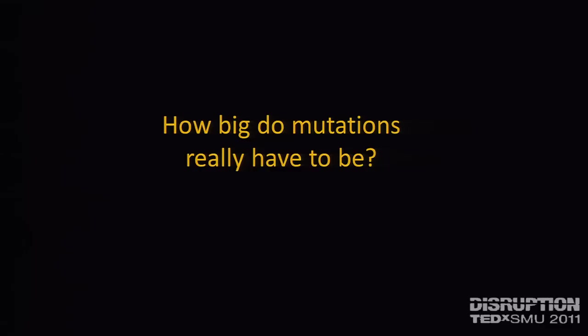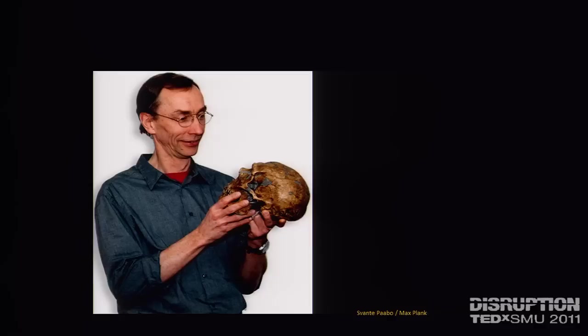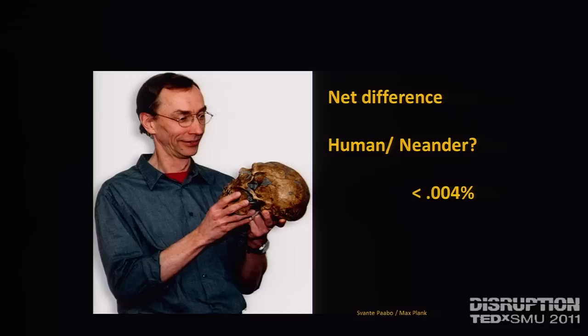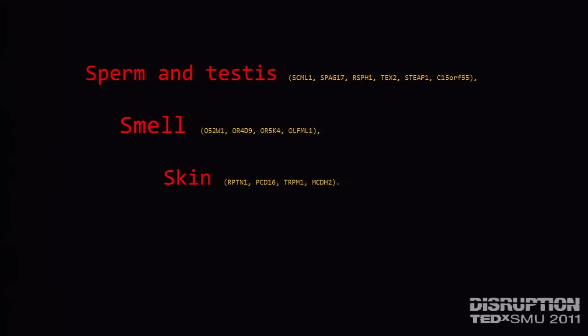One of the questions you might ask is, how big does a mutation have to be to create the difference between a Neanderthal and a human being? This is Svante Pääbo. He works at the Max Planck Institute. He's taken very small bits of degraded DNA out of the bones of Neanderthals and laid them next to the DNA of humans. He found that the difference between a Neanderthal and a human is about 0.004% of gene code. An absolute minute difference generates a speciation. And we can tell you exactly which genes are the difference between Neanderthals and humans — where they are and what they do.